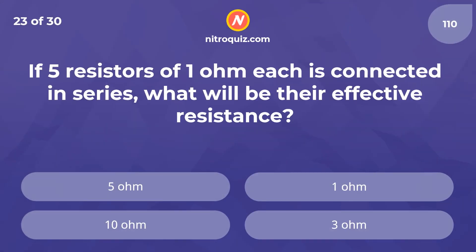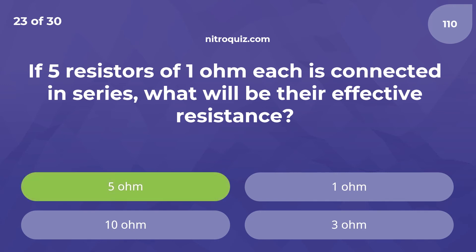If 5 resistors of 1 ohm each are connected in series, what will be their effective resistance? Answer is 5 ohms.